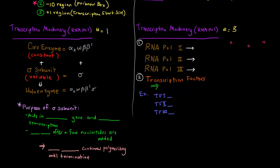So what is the purpose of the sigma subunit? What it does is it aids in binding the gene, and then it aids in starting transcription off. This core enzyme needs a little bit of assistance from a sigma subunit in order to bind the promoter region before it gets started with transcription.